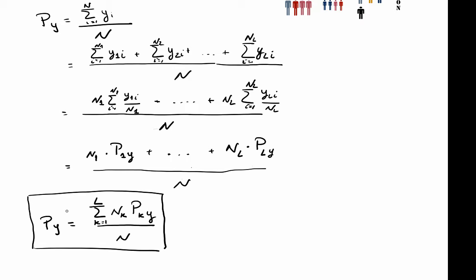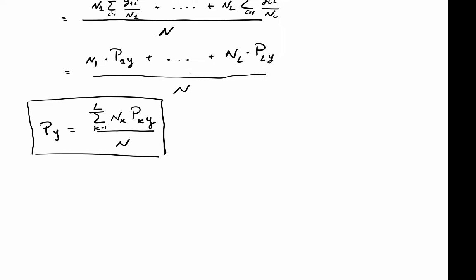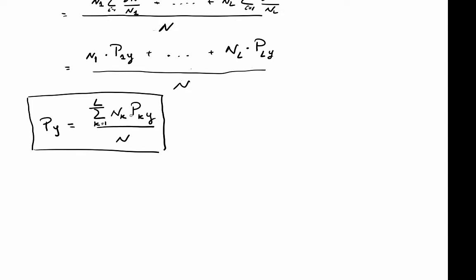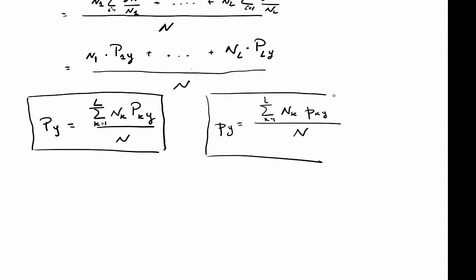Coming back to the population proportion: an estimator for this parameter can be obtained simply by substituting the proportion observed in the population for each stratum with the proportion computed in each stratum of the sample. So the estimator, little p_Y, is given by the same weighted average, but now using the sample proportion for each stratum, little p_kY, times N_k, divided by the population size N. This is the estimator for the proportion obtained from the sample.